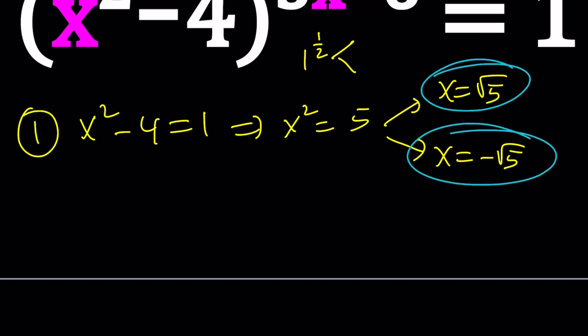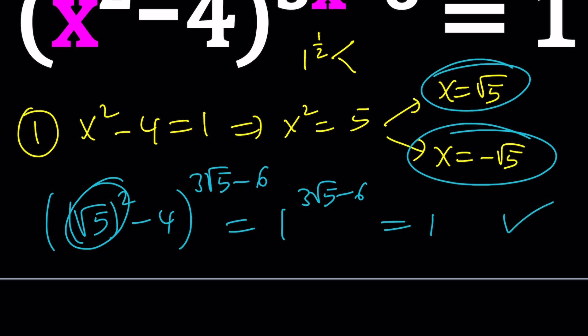We can definitely check this out, like take x equals root 5, root 5 squared minus 4, and then the exponent will be 3 root 5 minus 6. This will be 5. 5 minus 4 is 1. 1 to the power of 3 root 5 minus 6 is, of course, 1, because any power of 1 in the real world is just going to be 1. Are you convinced? Let's go ahead and talk about the second case.